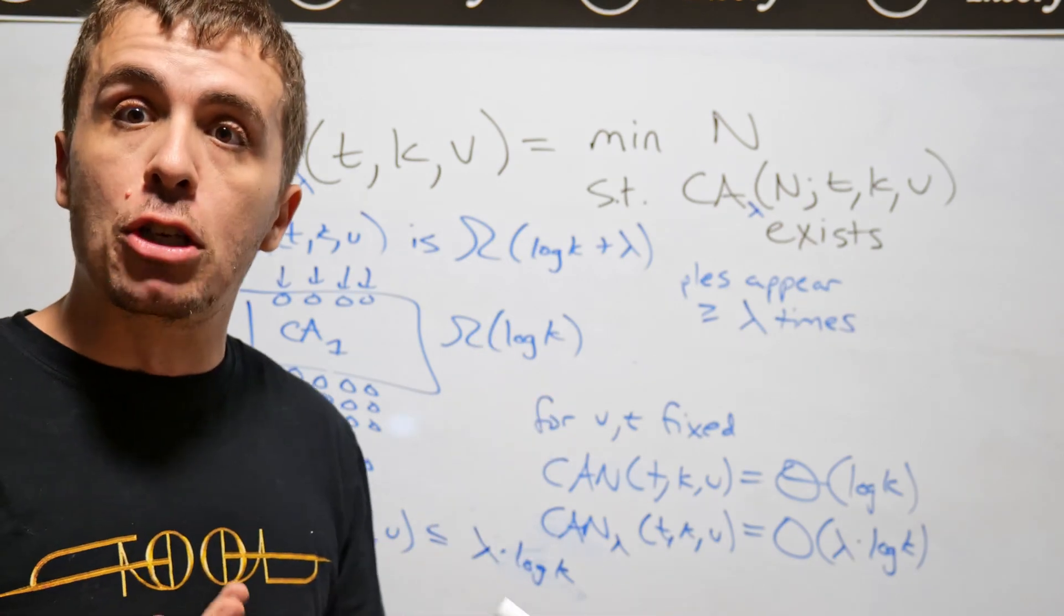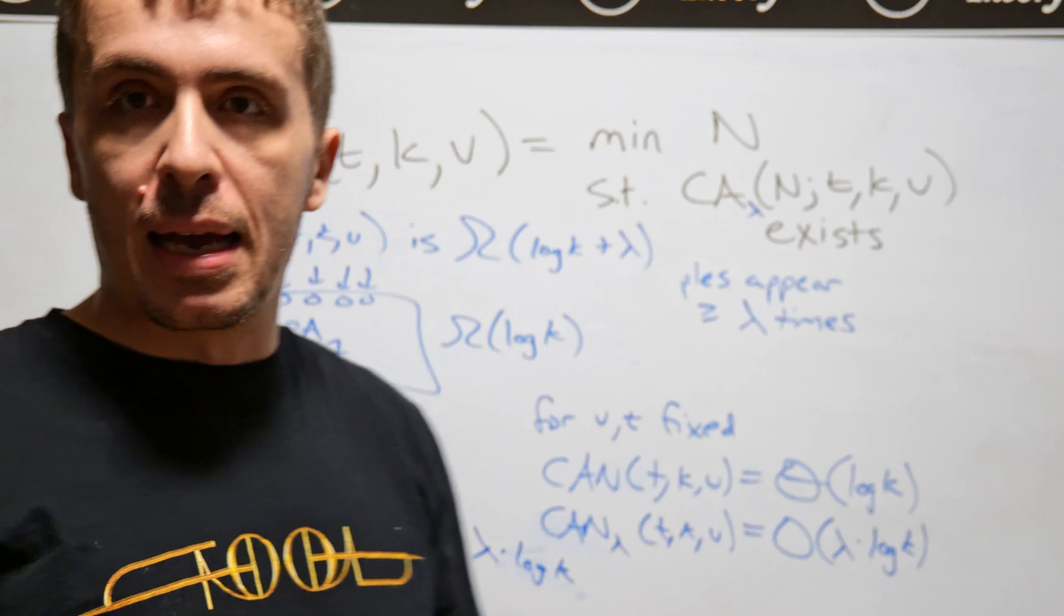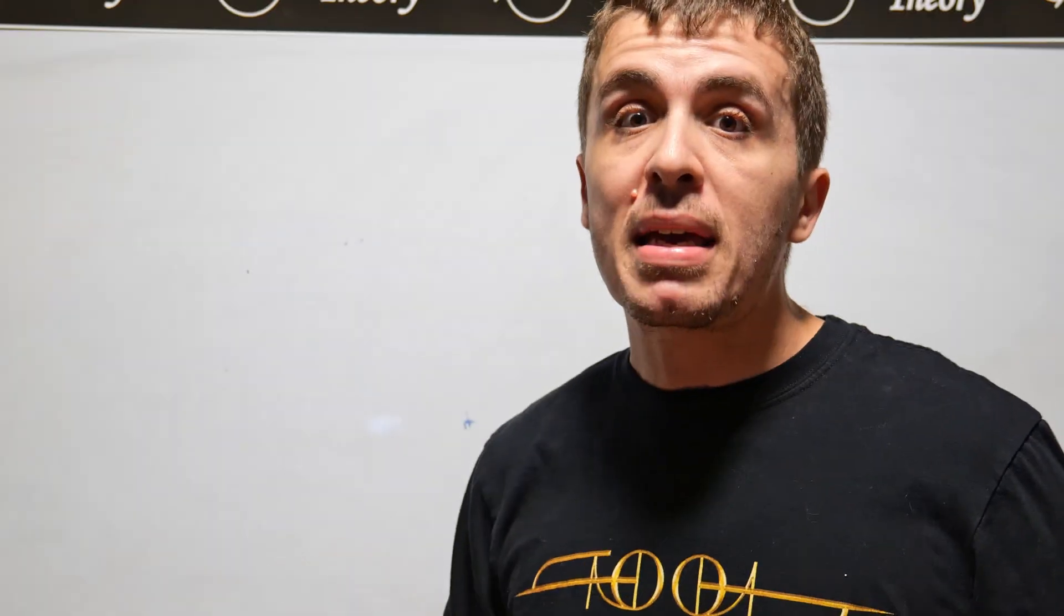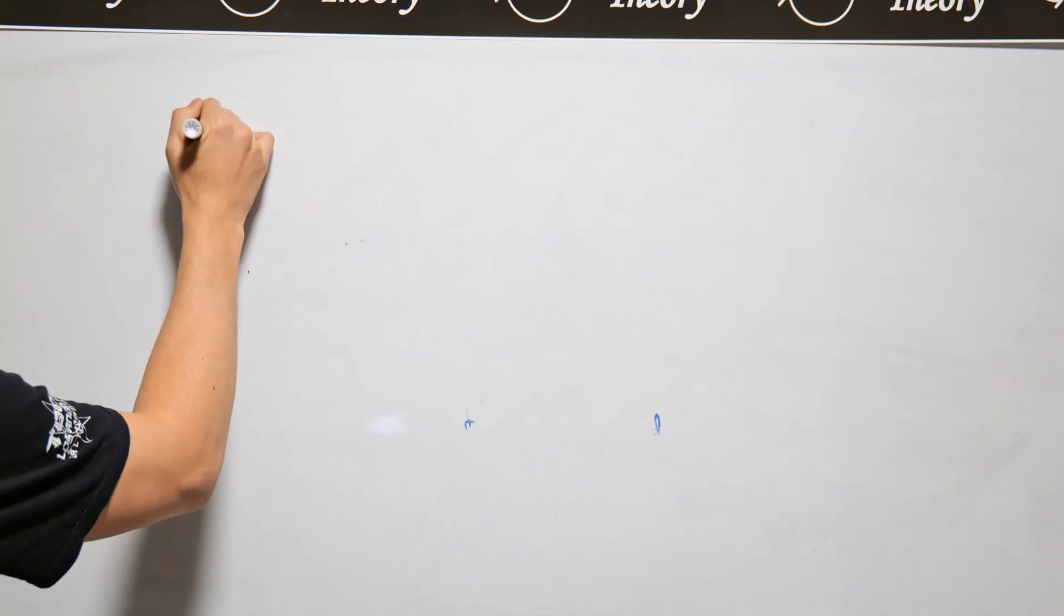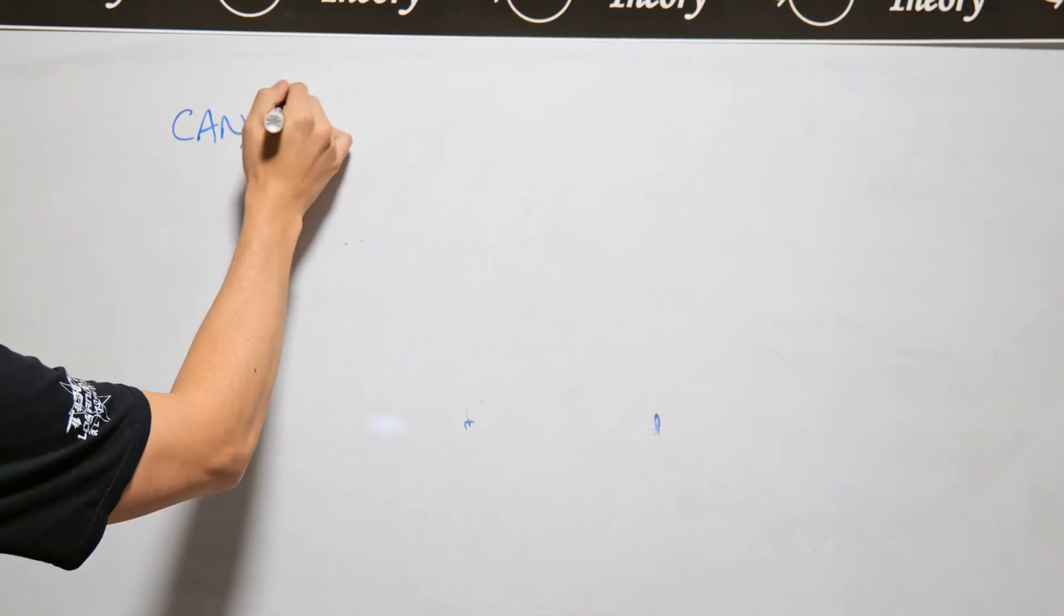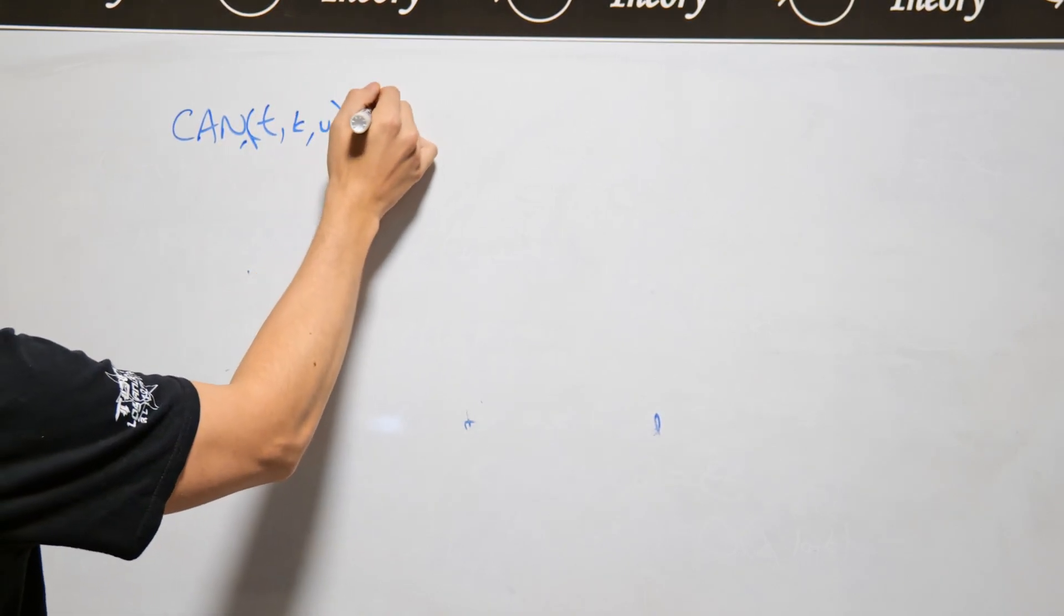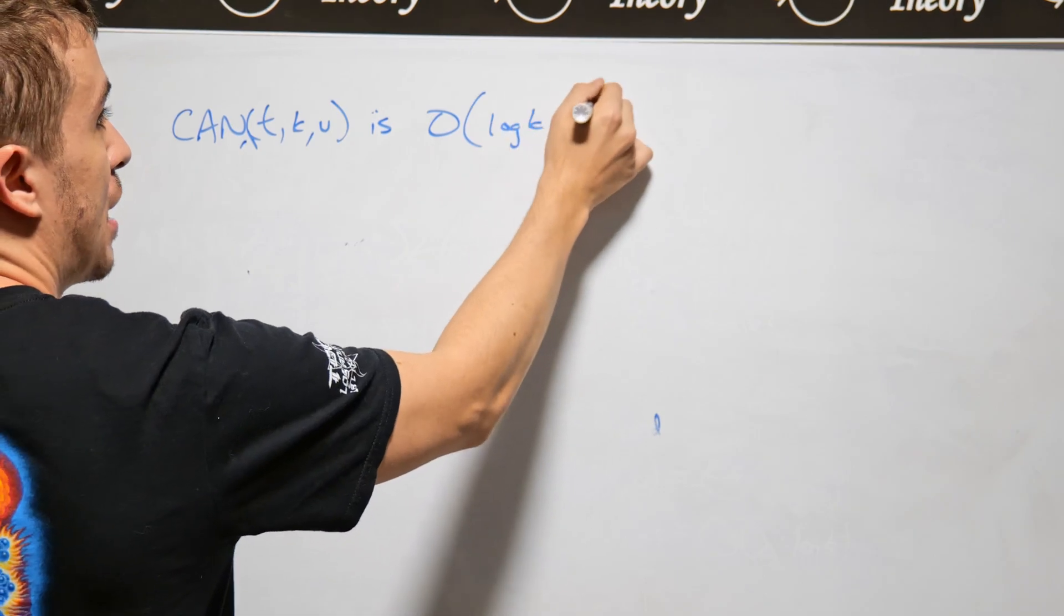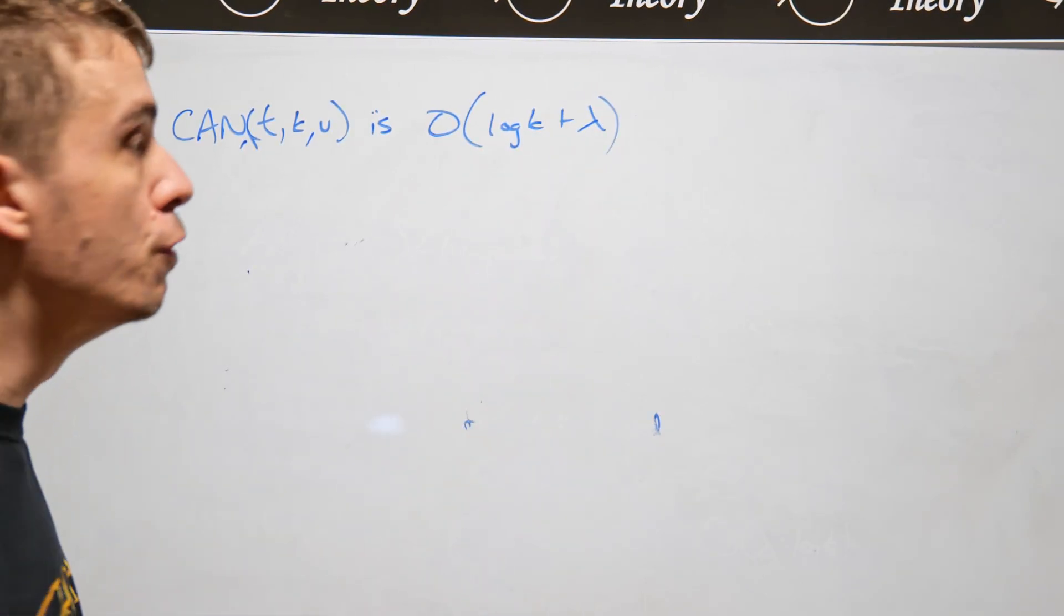And my conjecture was, it's going to be down here. And there's fairly good reason to suspect that this is the case. So let me give you some history as to the bounds that we can obtain. So CAN lambda t k v obviously is, at most, log k plus lambda. That's the bound that we just proved.